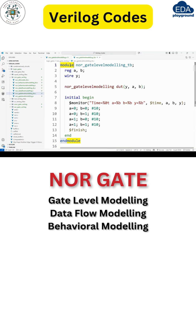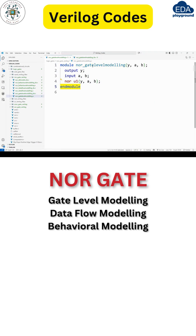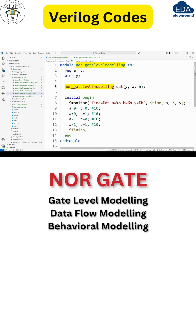Next, we have to write the test bench. Module, then module name. In the test bench, inputs are treated as registers and outputs are treated as wires. You have to instantiate the NOR gate-level model — the module name should be the same — followed by some instance name, then outputs and inputs.